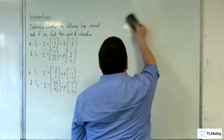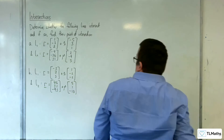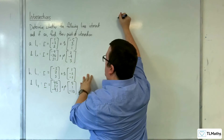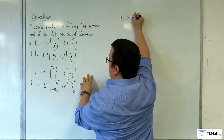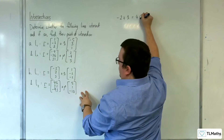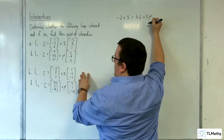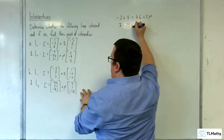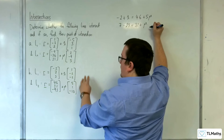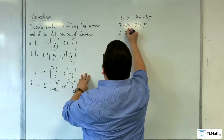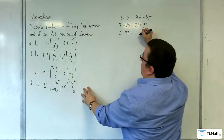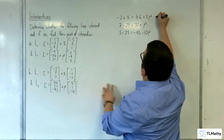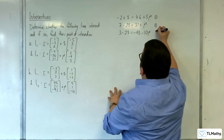Let's take a look at B. So we're going to do a similar job. We need the top row: minus 2 plus λ is equal to 46 plus 5μ. Then we've got 7 take away 2λ is equal to 32 plus μ. And then we've got 3 take away 2λ is equal to minus 93 take away 10μ. So equation 1, 2, and 3.